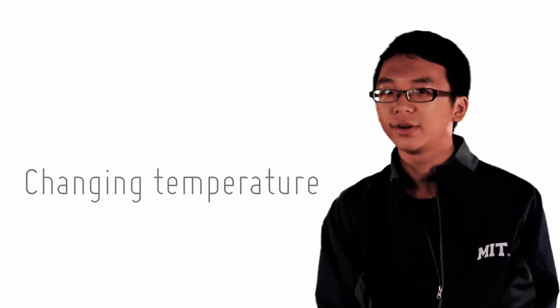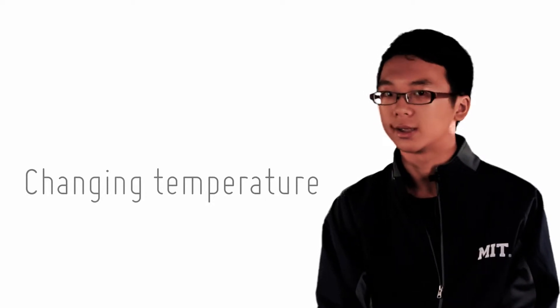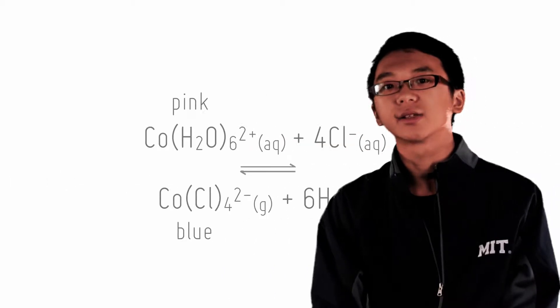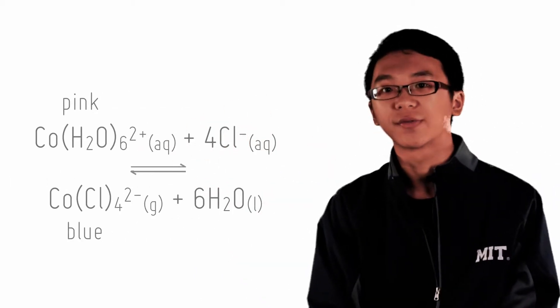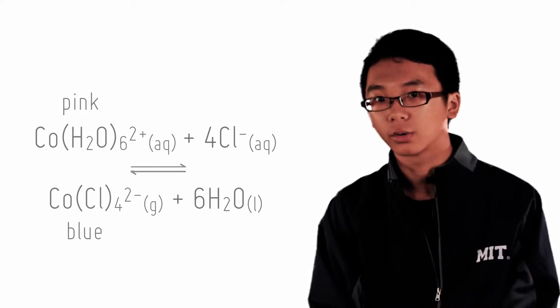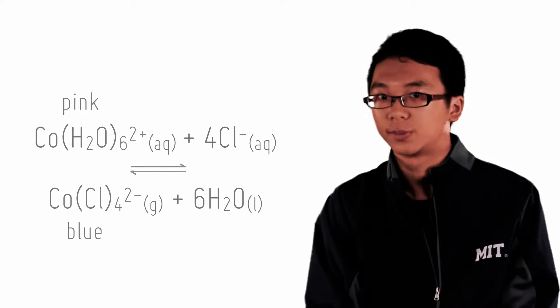Let us now look at what happens when there is a change in temperature on a system in equilibrium. Let's take this reaction for example: pink hexa-aqua-cobalt reacts with chloride ions to form tetrachlorocobalt and water, which is blue.